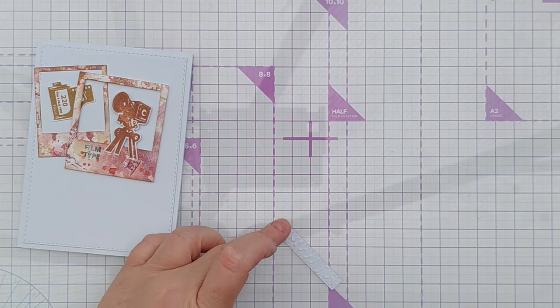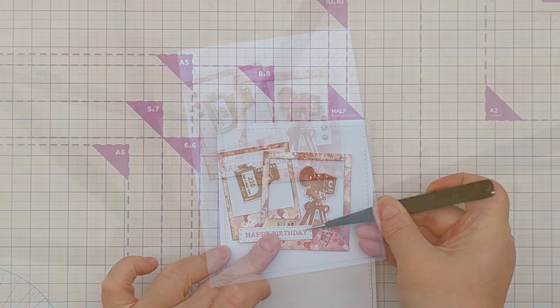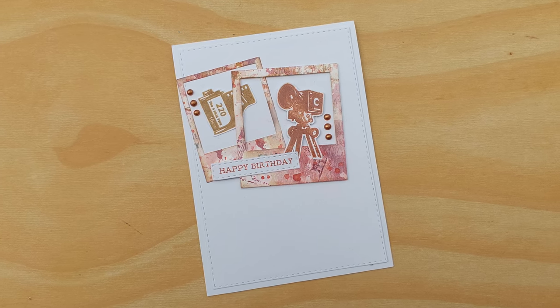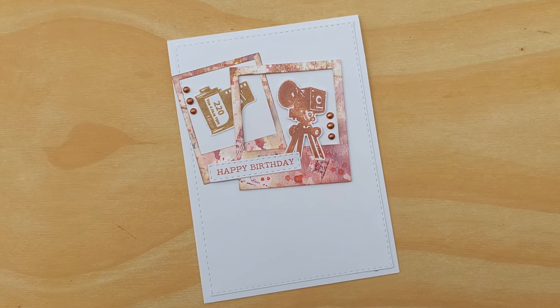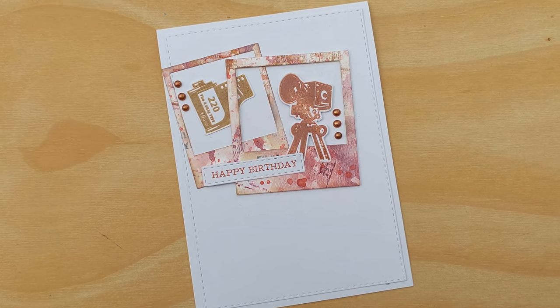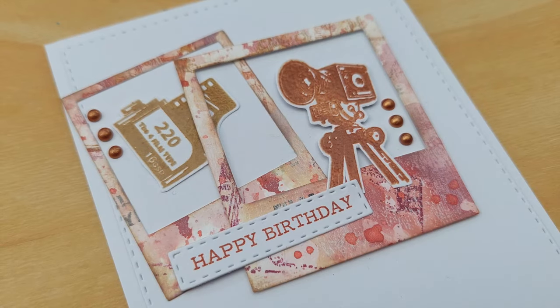For my sentiment, I chose a Happy Birthday. I stamped it in the sepia archival ink and die-cut it out with a stitched rectangle die. I placed this on the frames over to the left because that created a visual triangle with the camera and the film. And as a finishing touch, I wanted to bring in some bling, so I used three little copper nouveau drops in each frame, and that's this card finished.